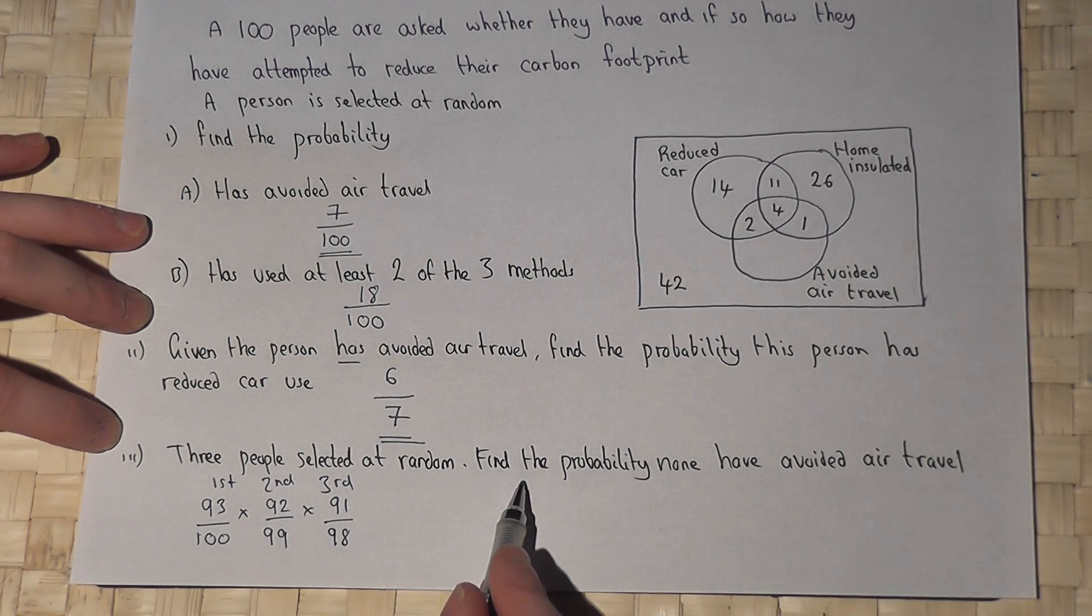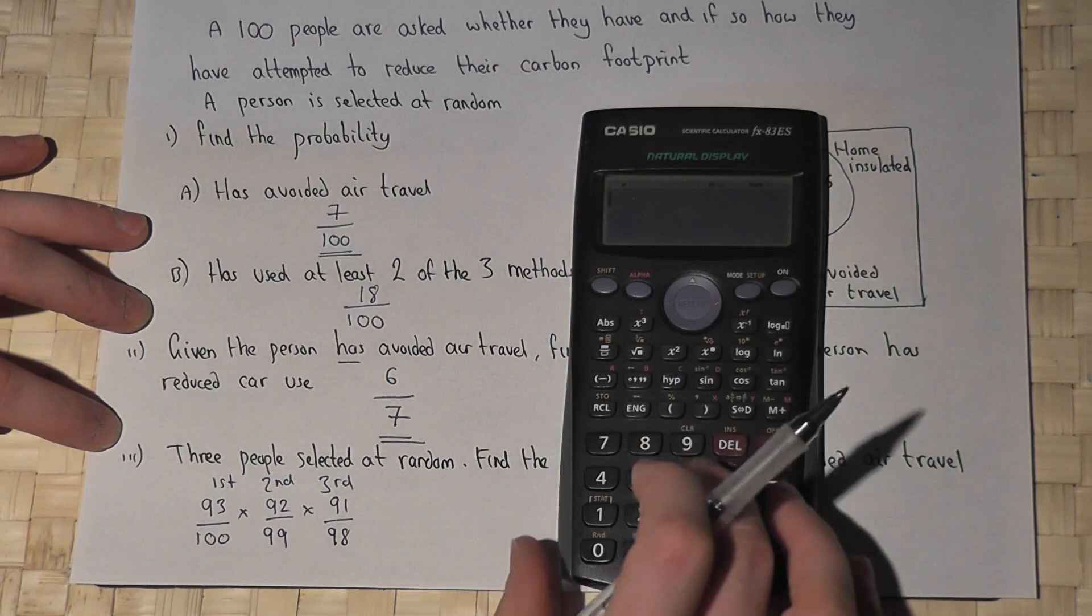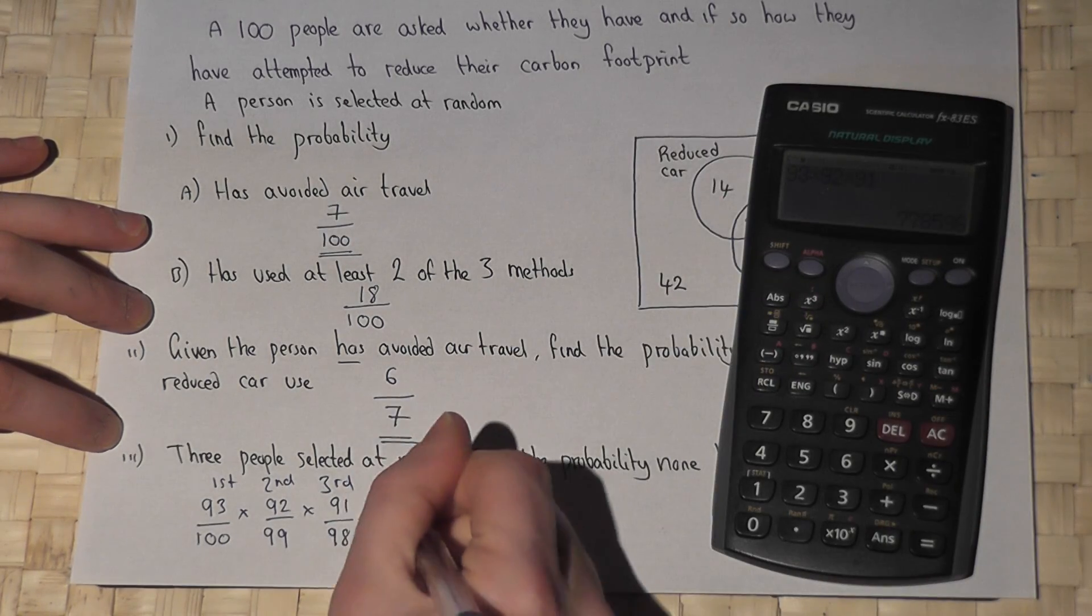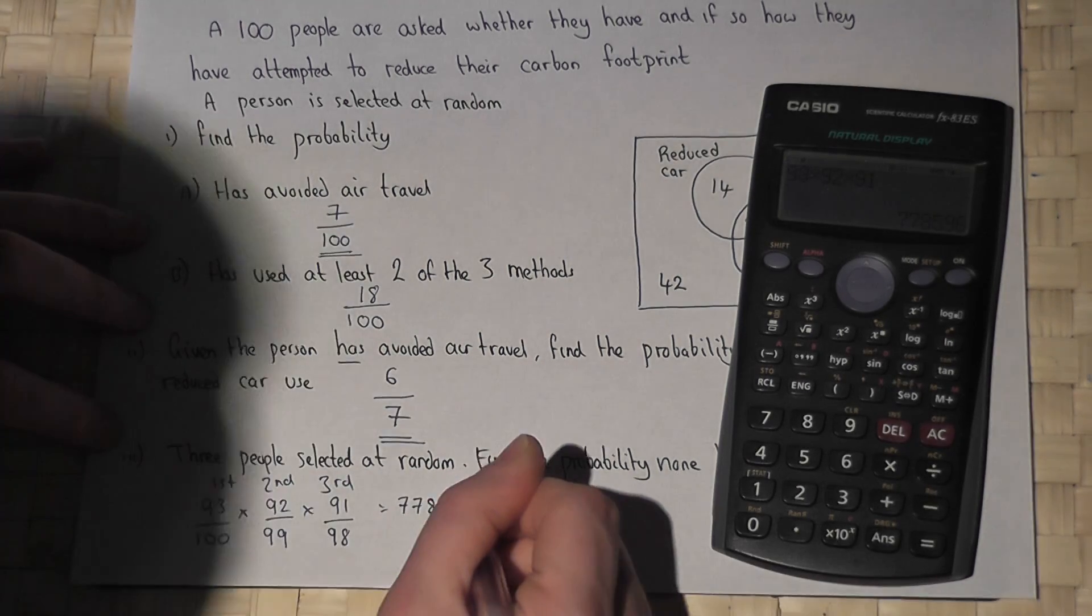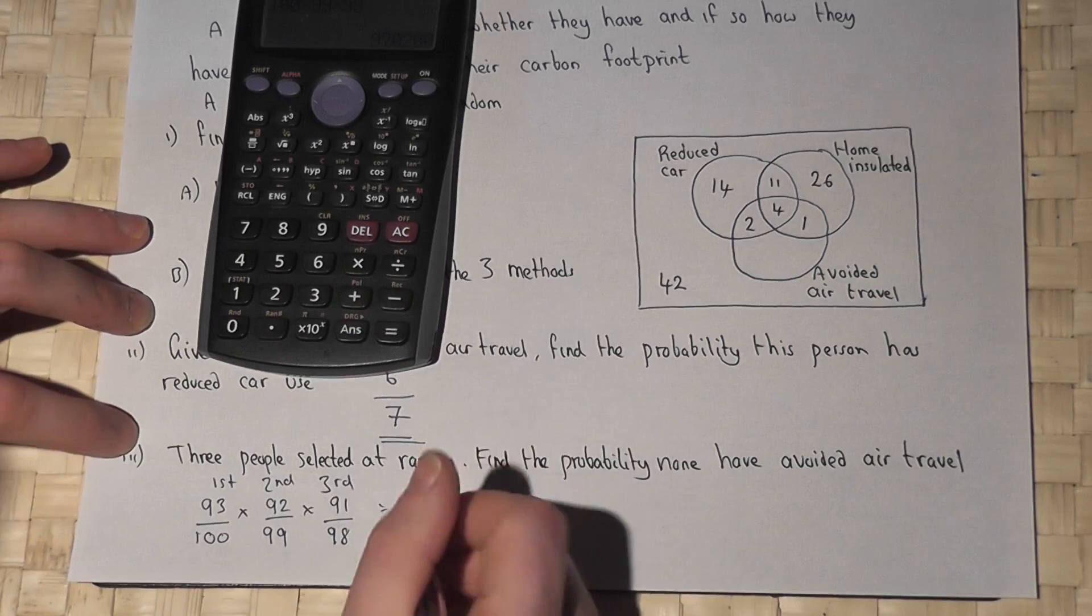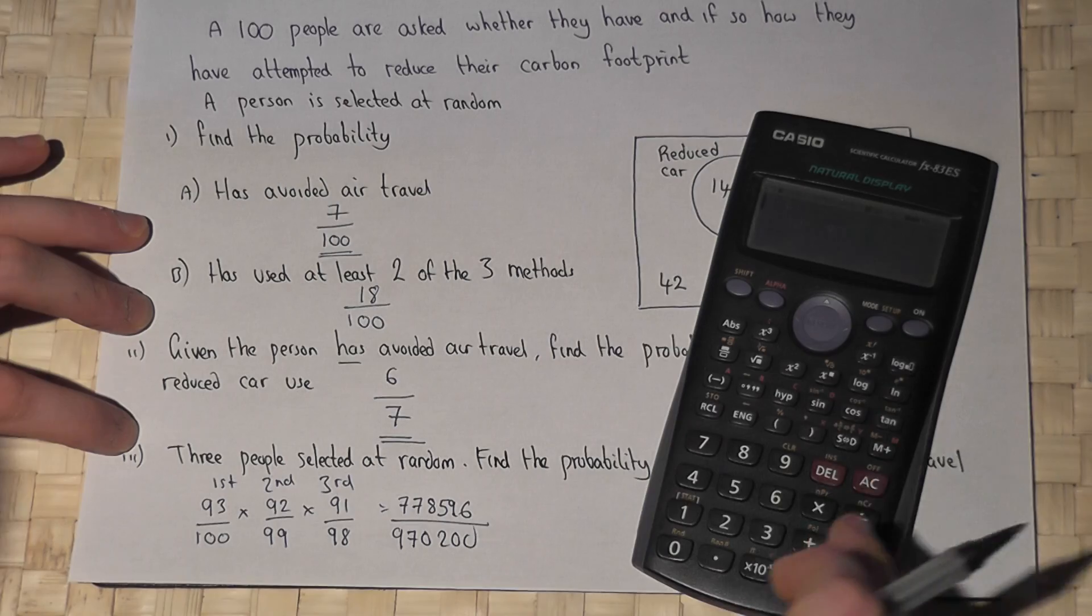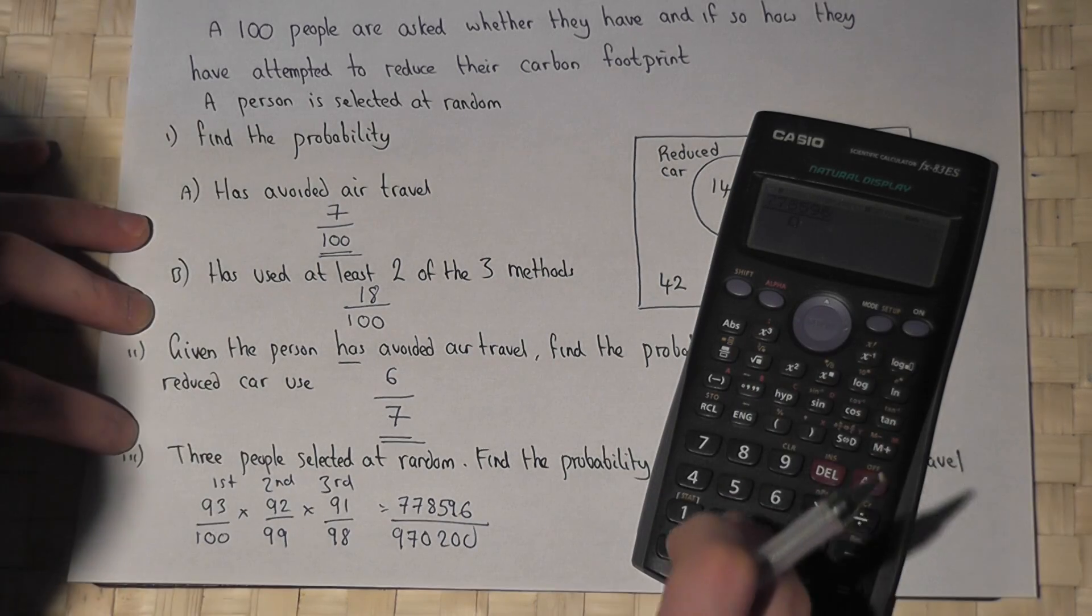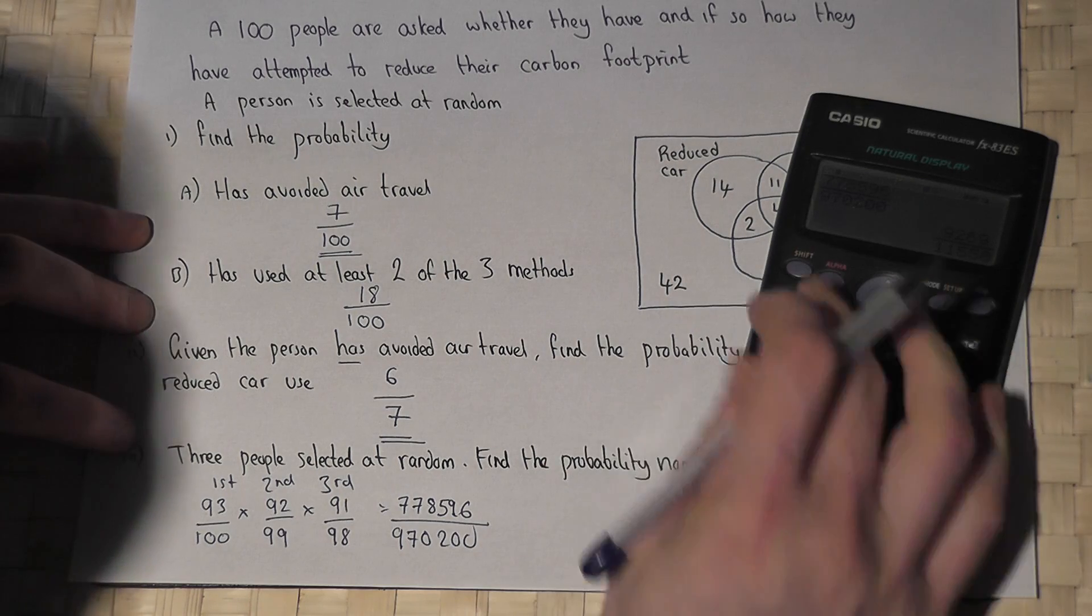So if we times together these three fractions, we find the chance that none of them have avoided air travel. So 93 times 92 times 91 equals 778596, all over 100 times 99 times 98, which is 970200. Again, that might cancel down, 778596 over 970200. It cancels down a little bit, but to a decimal it is 0.803 to 3 decimal places.